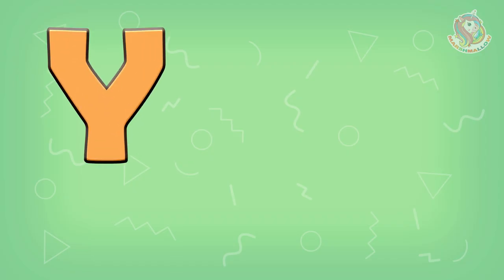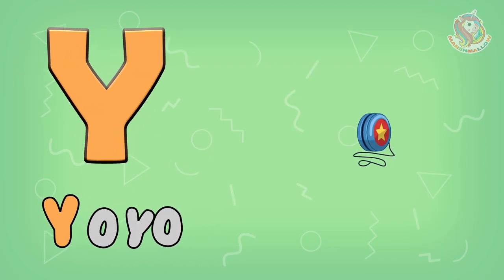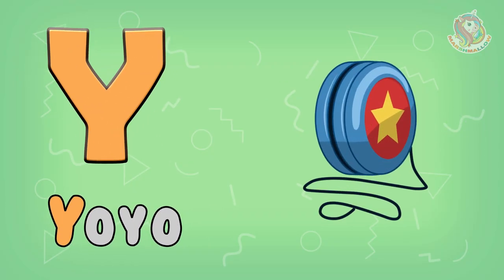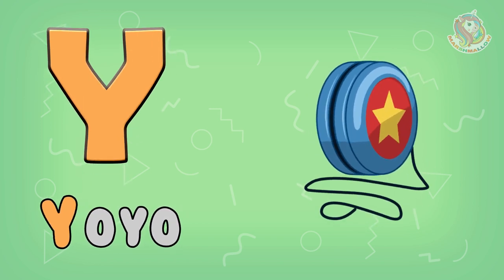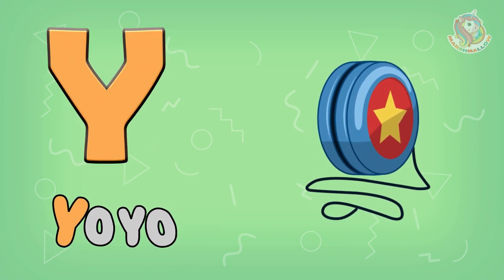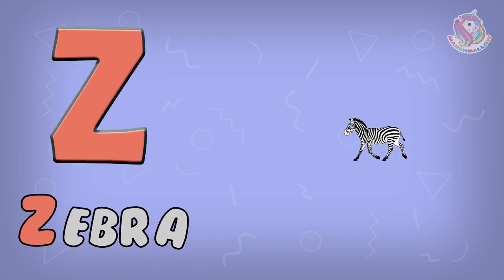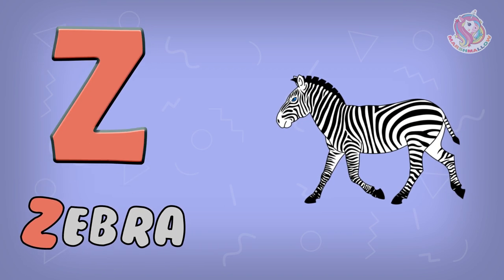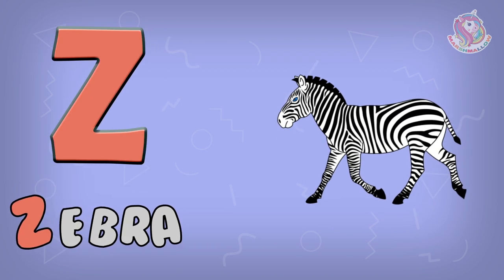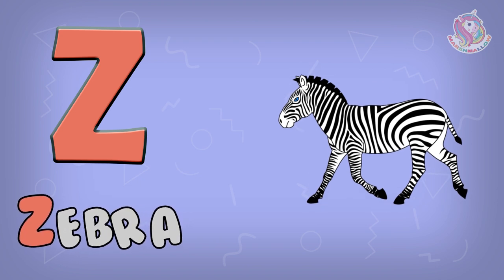Y is for Yo-yo. Y, Y, Yo-yo. Y, Y, Yo-yo. Z is for Zebra. Z, Z, Zebra. Z, Z, Zebra.